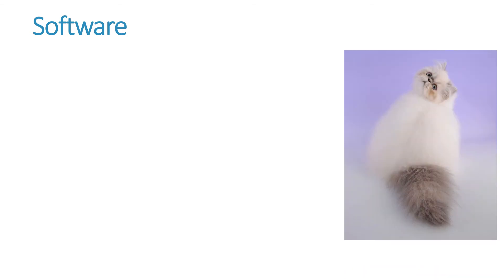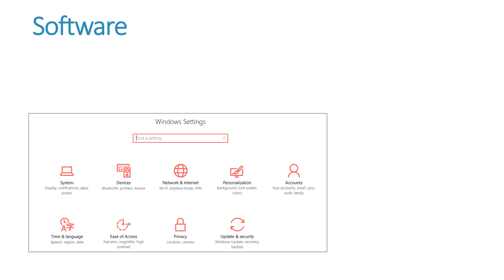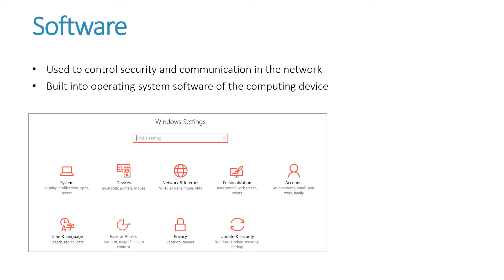Next we need software — not that sort of software. If you've got a small network, Windows will do, because it's got networking capabilities incorporated into it. The software is used to control security and communication in the network. It is built into the operating system software of the computing device. But if you have more than 10 computers in your network, you are going to need a fancier type of networking software.